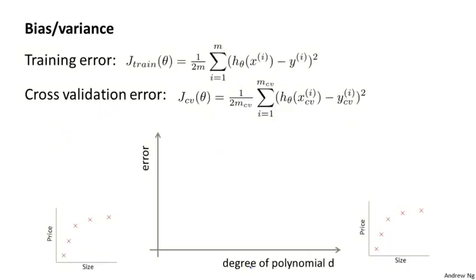Concretely, let's let our training error and cross validation error be defined as in the previous videos — the average squared error as measured on the training set or as measured on the cross validation set.